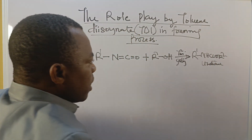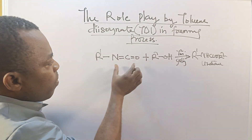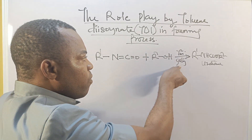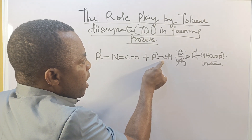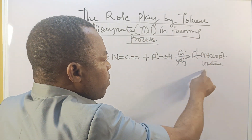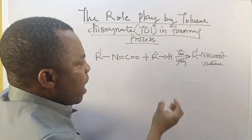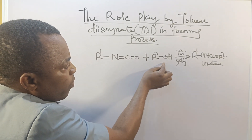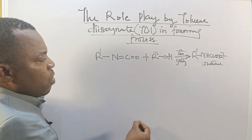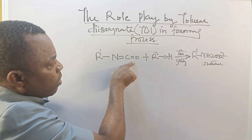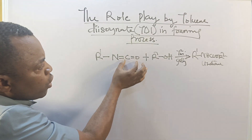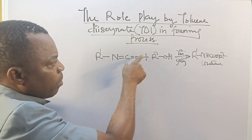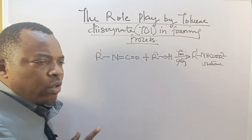Looking at this explanation — this is TDI reacting with a polyol. The tin catalyst is responsible for cross-linking between the hydroxyl group and the isocyanate group to form the urethane linkage. The tin catalyst is present here as a Lewis acid acting as an activator, because there is a nucleophilic attack on this carbon.